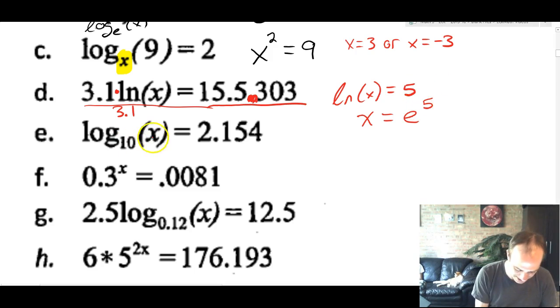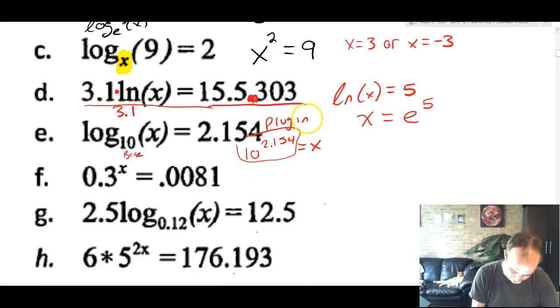Next problem. Log base 10 of x is 2.154. 10 is the base. X is the argument here, so this is going to say 10 to 2.154 is equal to x. This is just a number, so I just plug it in using your calculator to get the exact answer.